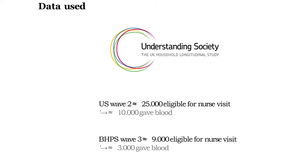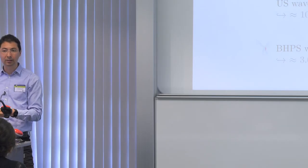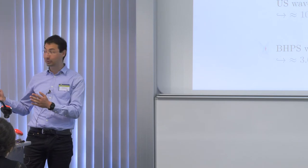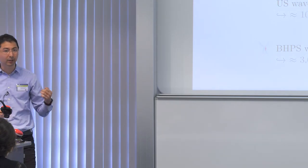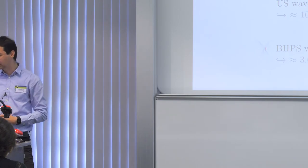Data collection was done with the same nurses in both datasets, so in principle we might expect differences because we have different people. In BHPS, people are older and also very compliant — they've been in the survey for 20 waves, so they're really good respondents. In Understanding Society we have more new respondents who might drop off soon.